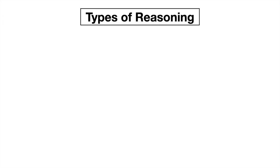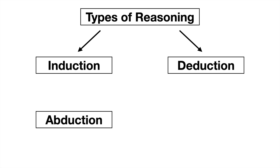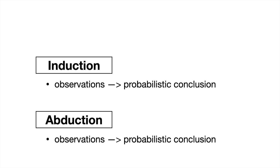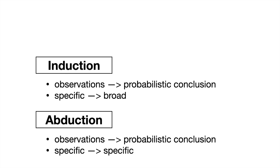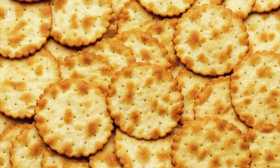Another thing I said earlier is that there might actually only be two types of reasoning, depending on how you think about them. To me, it seems like abductive reasoning could be thought of as induction — you're taking observations and forming a probabilistic conclusion based off of them. However, the main difference, as I see it, is that inductive reasoning takes specific observations to form a broader conclusion, whereas abduction takes specific observations but keeps the conclusion just as specific. An abductive conclusion would be that your wife must have been behind this particular scene of jam and crackers, but an inductive conclusion would be more like your wife is responsible for all appearances of mysterious jam and crackers in your kitchen.